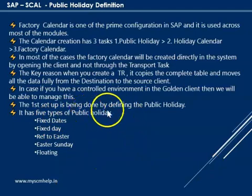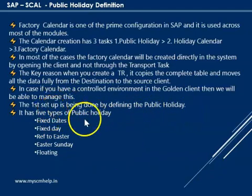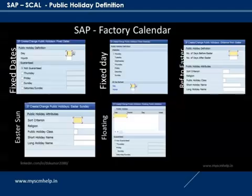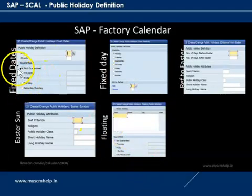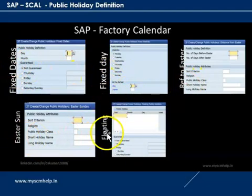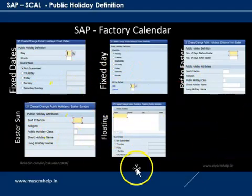The first step is defining the public holiday. There are five ways to do this: fixed day, fixed day from a date, distance to Easter, Easter Sunday, and floating. Now we will see in the system how this is done.